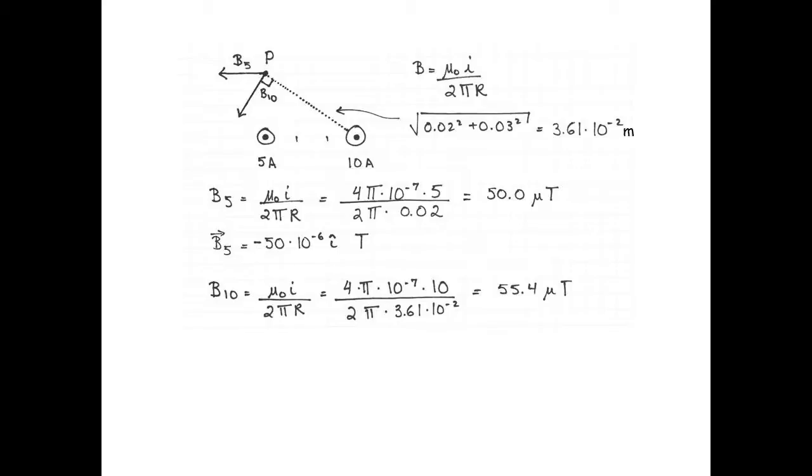The magnitude of the magnetic field of the 10 Ampere wire is 4 pi 10 to the negative 7 multiplied by 10 Amperes divided by 2 pi multiplied by 3.61 cm, and we get 55.4 micro tesla.